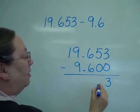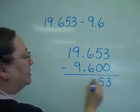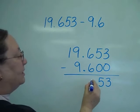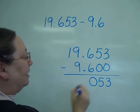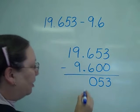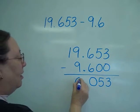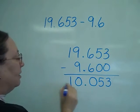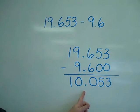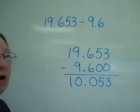3 minus 0 is 3. 5 minus 0 is 5. 6 minus 6 is 0. Decimal drops straight down. 9 minus 9 and 1 minus 0. So it's 10 and 53 thousandths.